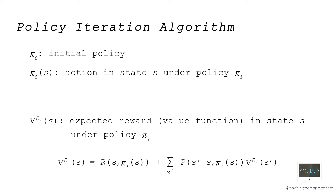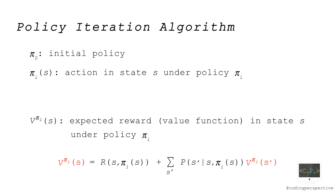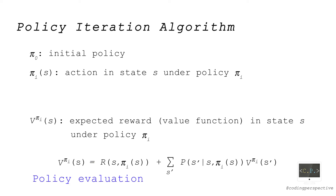We can calculate v^{pi_i}(S) by taking action pi_i(S), as shown, for each state S. On the right-hand side, the first part of the summation is the intermediate reward and the second part is the expected future reward. Note that v^{pi_i} appears on both sides of the equation. We have a number of linear equations equal to the size of state set S to solve, in order to calculate the value functions under policy pi_i. This is the second step, called policy evaluation.